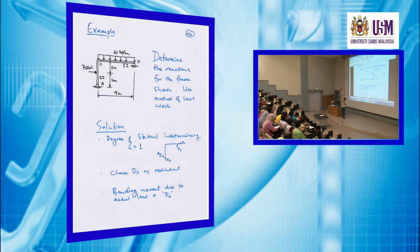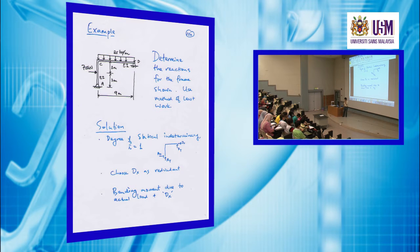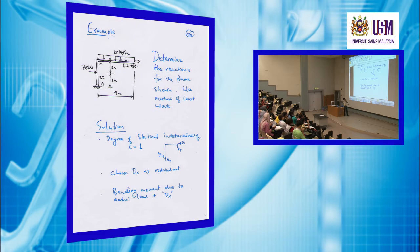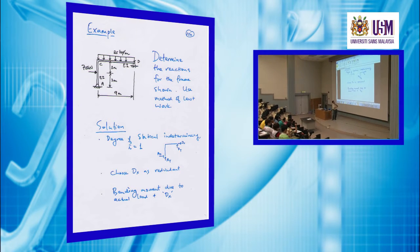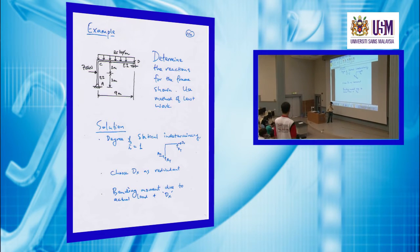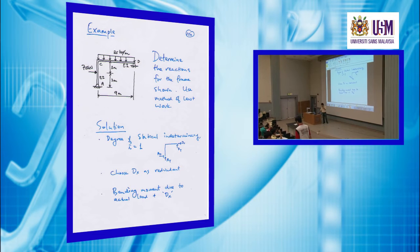Next, you have to choose a redundant. Because the degree is one, you have to choose one redundant — either DX, DY, AX, or AY. We can choose either one. But in this example, we choose DX, the horizontal reaction force at D, as the redundant. Unless it is specifically requested that you choose DX, you can choose any other: AX, AY, DX, or DY.